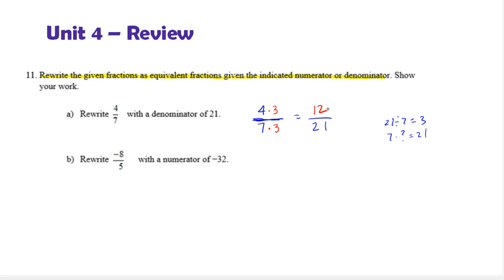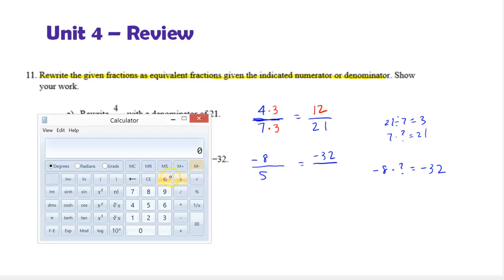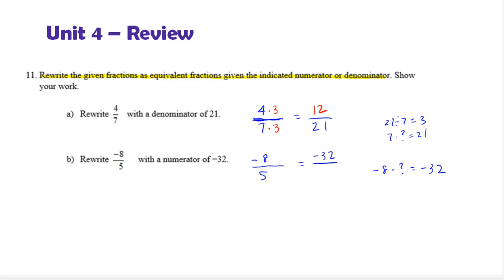Let's look at the next one. We have negative 8 over 5. We want to rewrite this with a numerator of negative 32. Looking at the number we're given, the negative 32, you're going to think, what do I multiply negative 8 by to get negative 32? The result is 4. You could also think of dividing 32 by 8. Since they're both negative, the answer is positive, and you multiply by 4. Whatever I do to the top, I'm going to do to the bottom too. 5 times 4 is 20. So our result is negative 32 over 20.